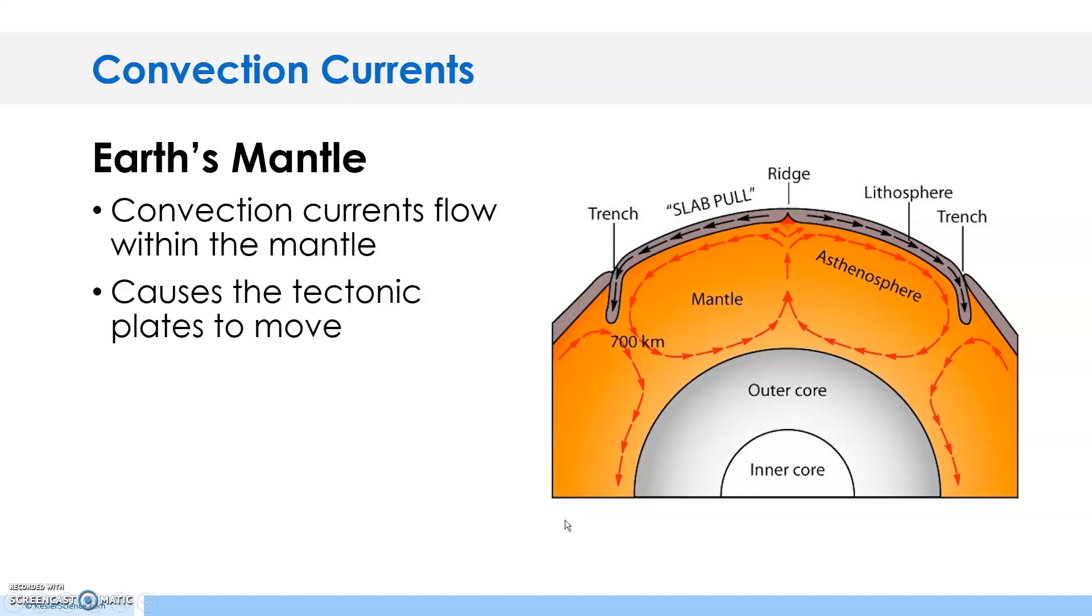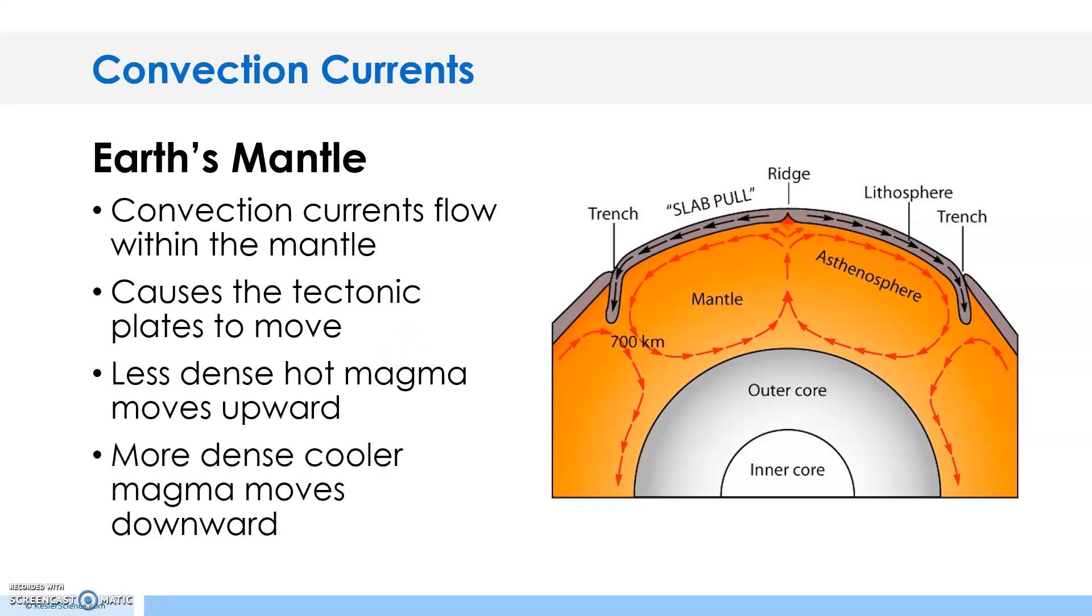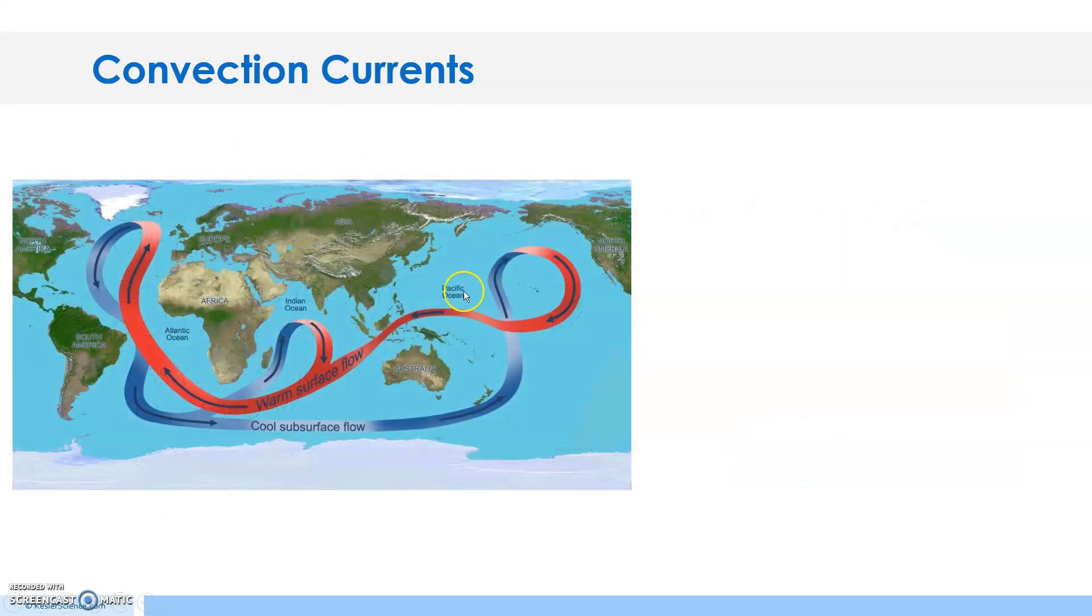Here's a diagram of the Earth's mantle. Convection currents flow within the mantle and cause the tectonic plates to move. You'll learn more about that when we get to that topic. Less dense hot magma moves upward, while more dense cooler magma moves downward.